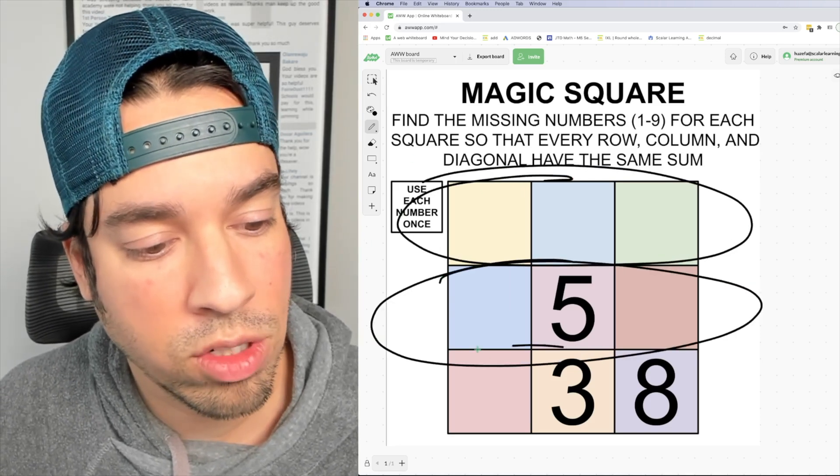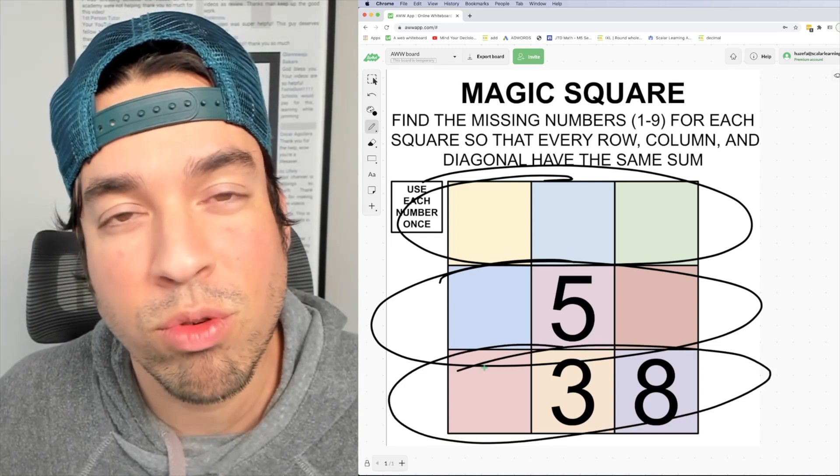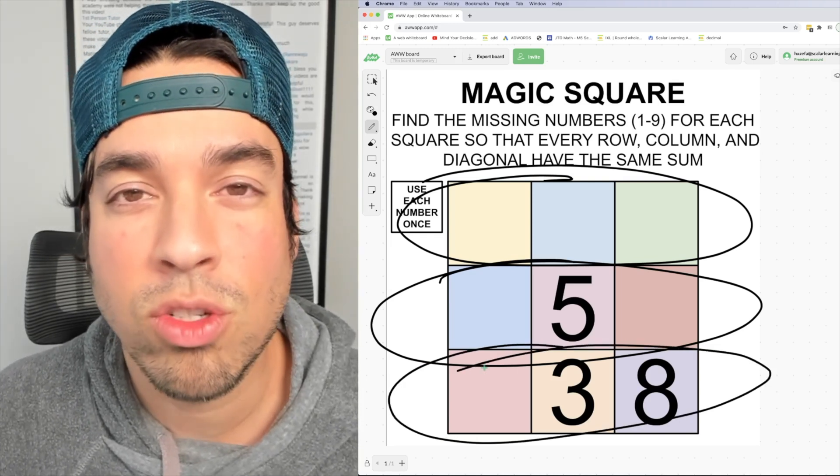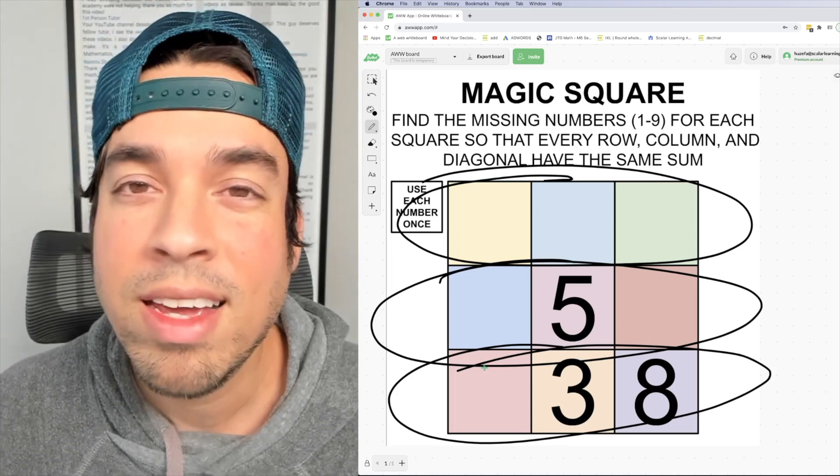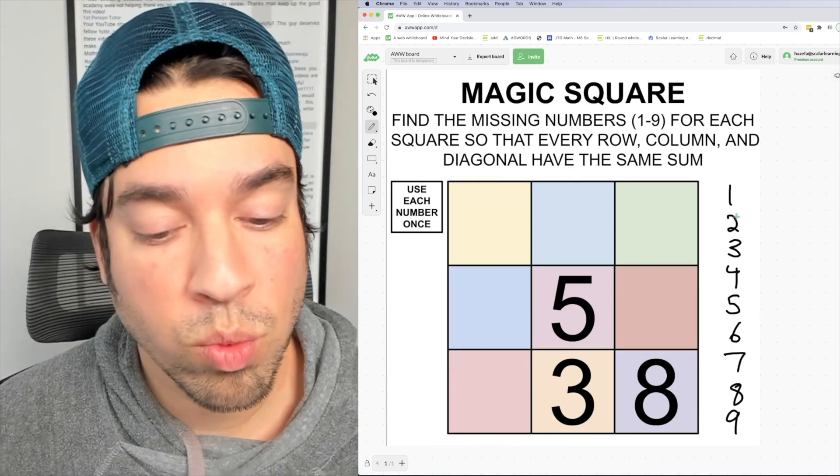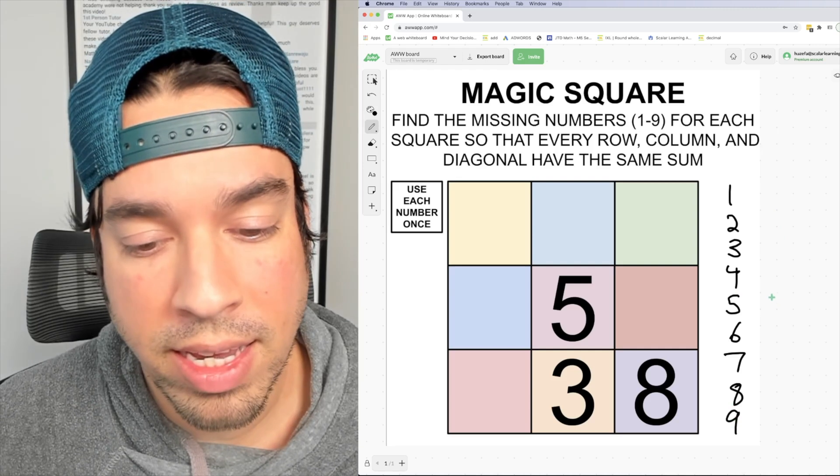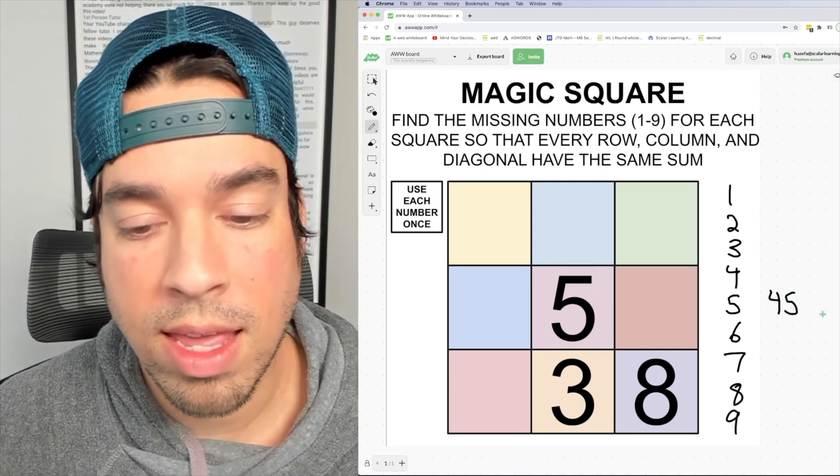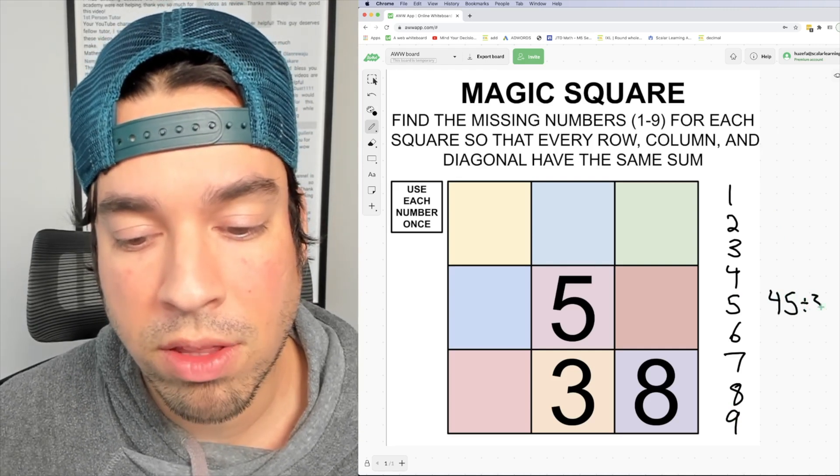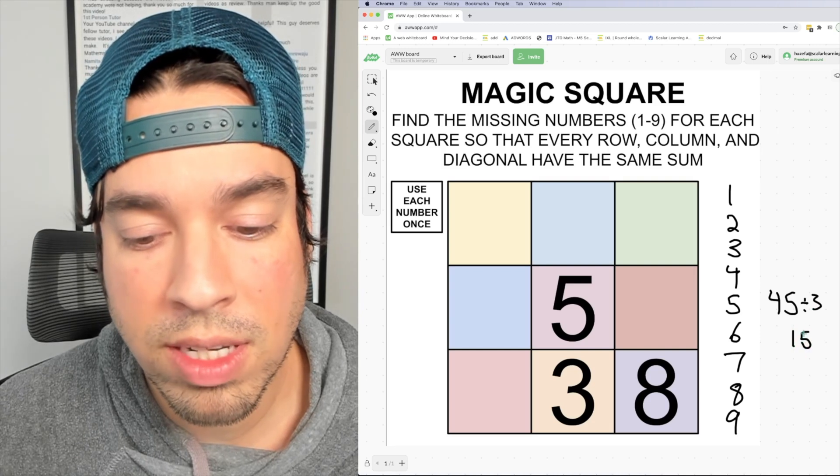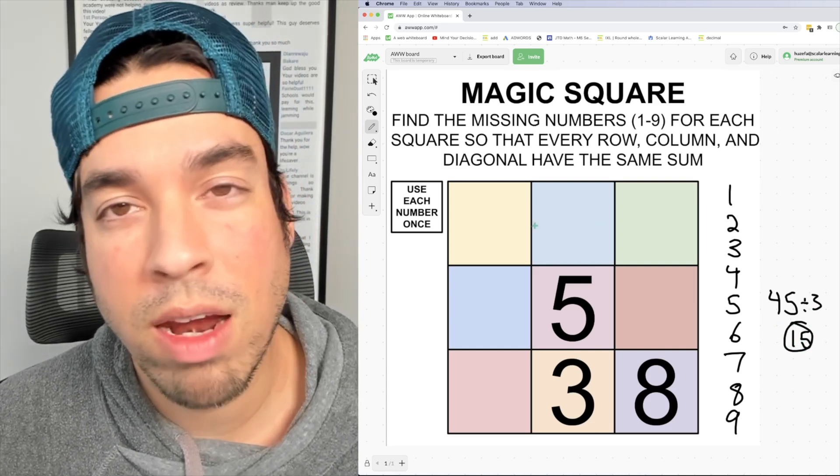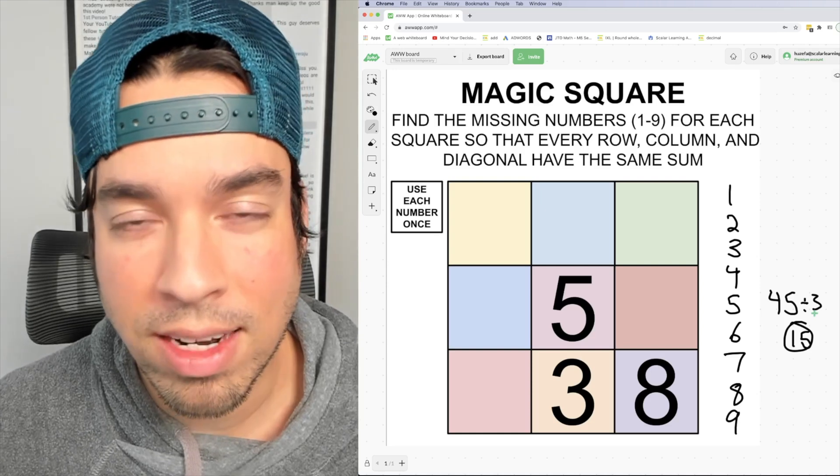So if I'm breaking it into three groups it makes sense that I would have to take the total of all of those nine numbers and divide by three. So if I take numbers one through nine, add them all up, I get 45, and then 45 divided by three is of course 15. So 15 is going to be the magic number for what every row, column, and diagonal must add up to.